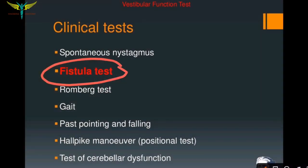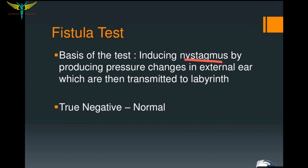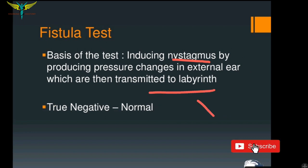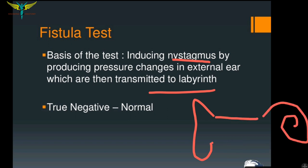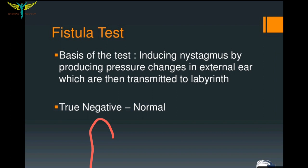The fistula test is one of the important tests to assess the vestibular functions of the ear. The basis of this test is to induce nystagmus by producing pressure changes in the external ear, which are then transmitted to the labyrinth. Pressure changes induced in the external ear are transmitted into the labyrinth, and the positivity and negativity of this test indicates the vestibular functions. Remember, stimulation of the labyrinth induces nystagmus and vertigo.